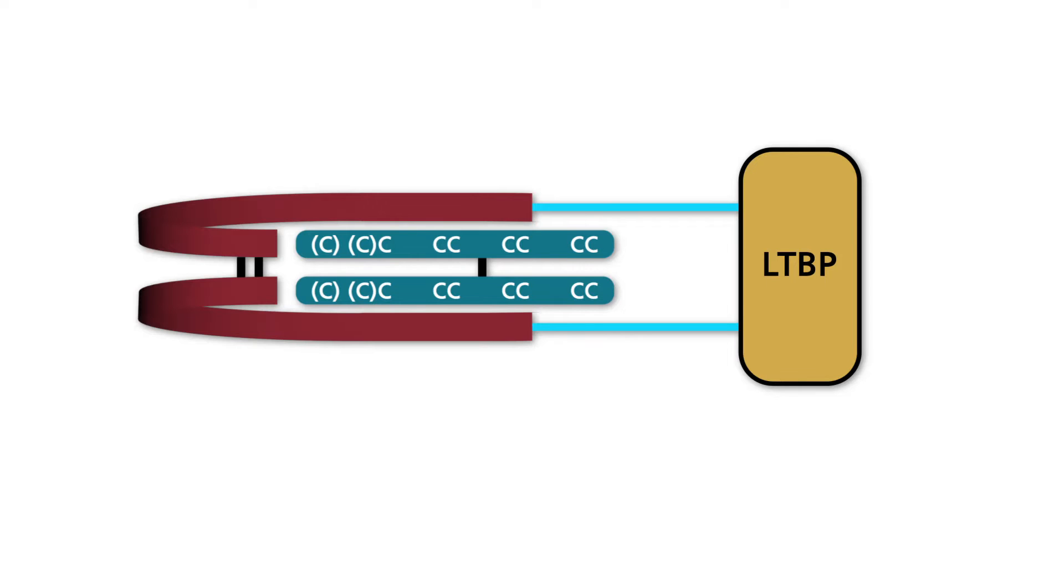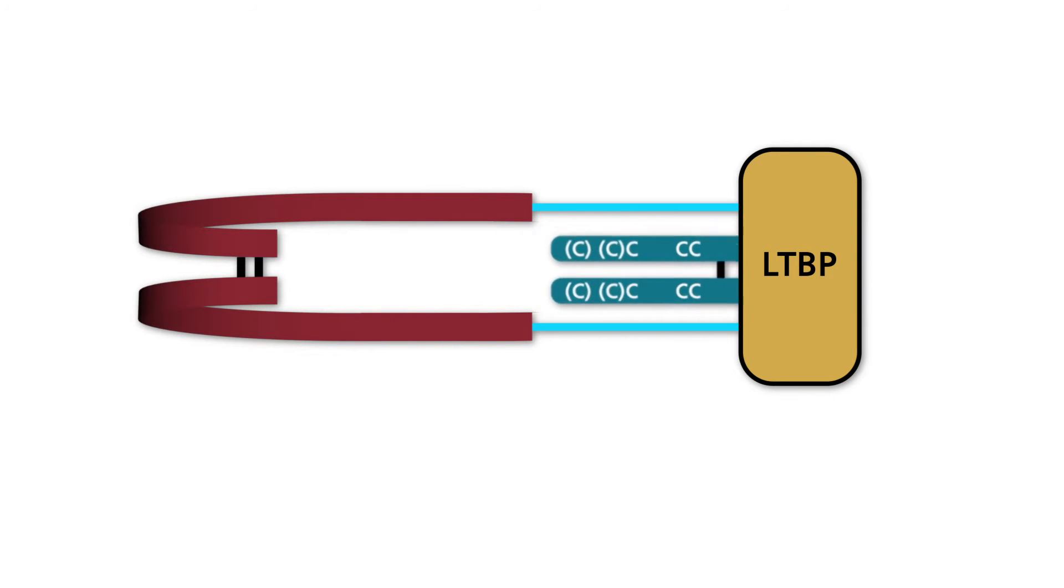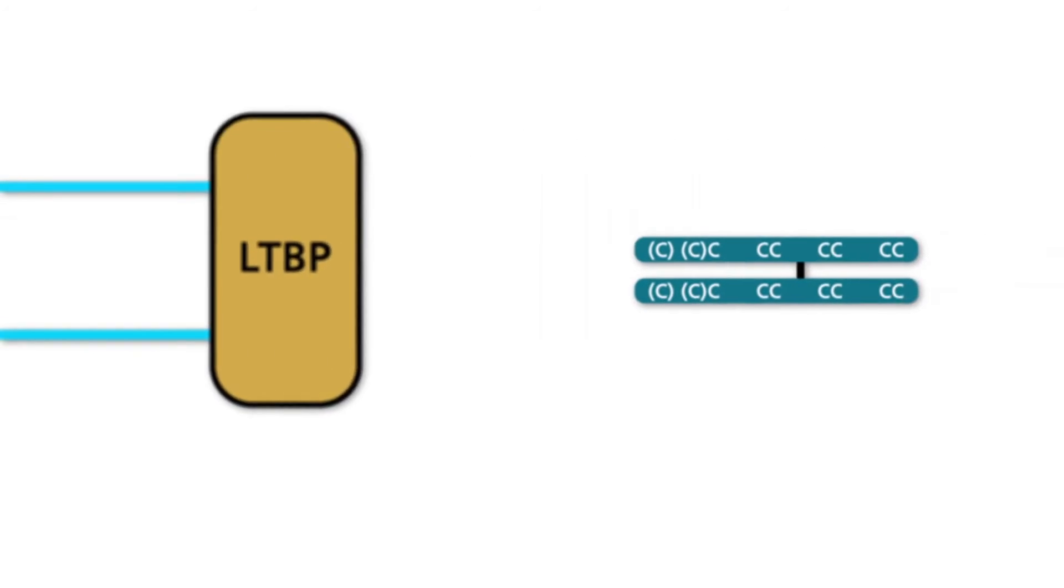Active TGF beta is liberated from this complex by a variety of mechanisms or molecules, such as proteolytic cleavage, thrombospondin-1, reactive oxygen species, and low pH.